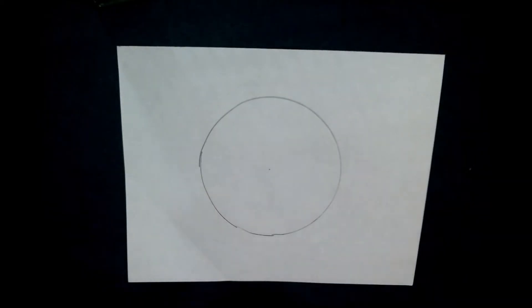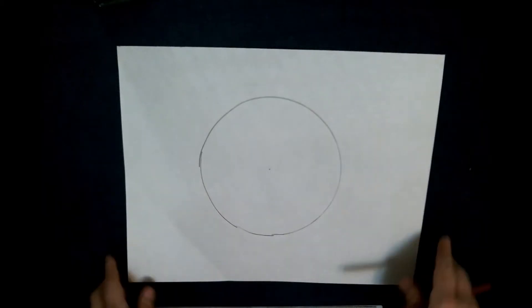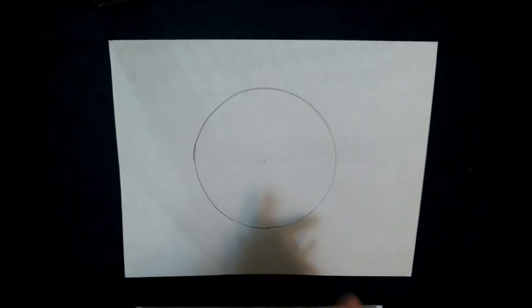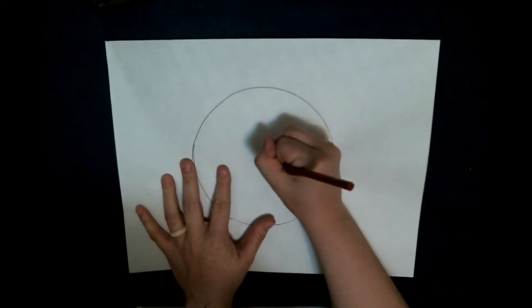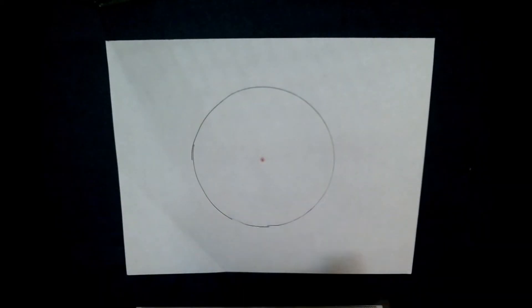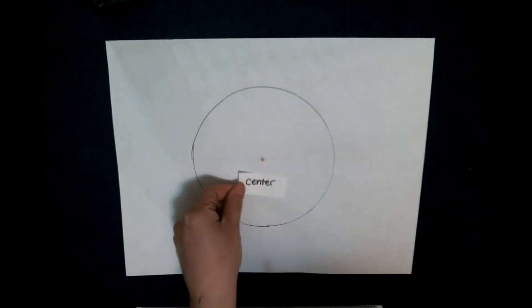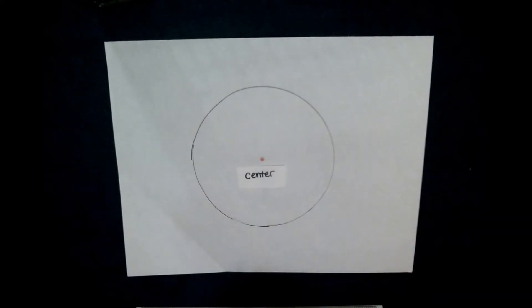So there's a couple different parts that we should go over. First, let's talk about this point right here that I made with my push pin. I'm just gonna kind of color that in red. This part of the circle is called the center, okay? The center of the circle.